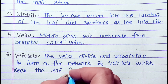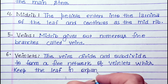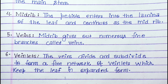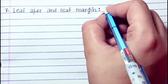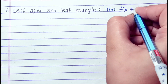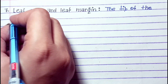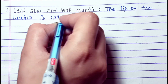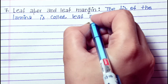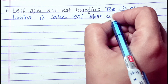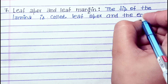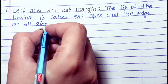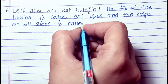Veinlets: The veins divide and subdivide to form a fine network of veinlets, which keep the leaf in the expanded form. Leaf Apex and Leaf Margin: The tip of the lamina is called leaf apex, and the edge on all sides is called leaf margin.